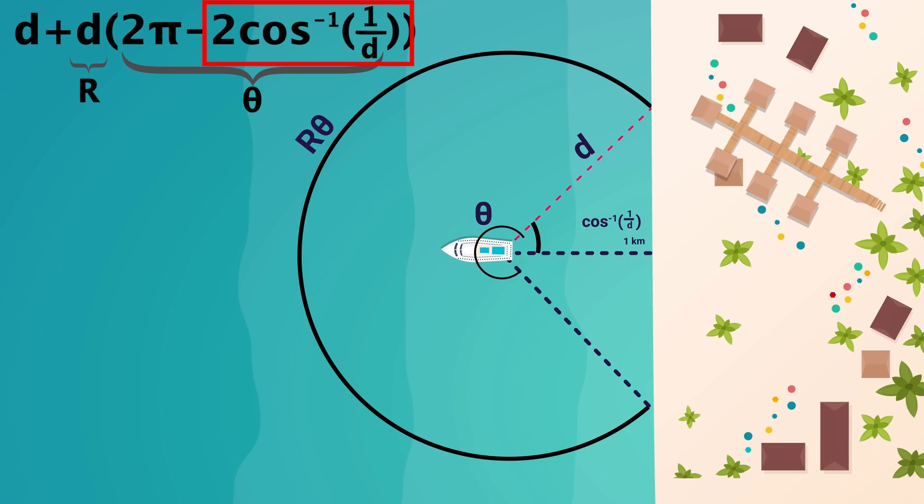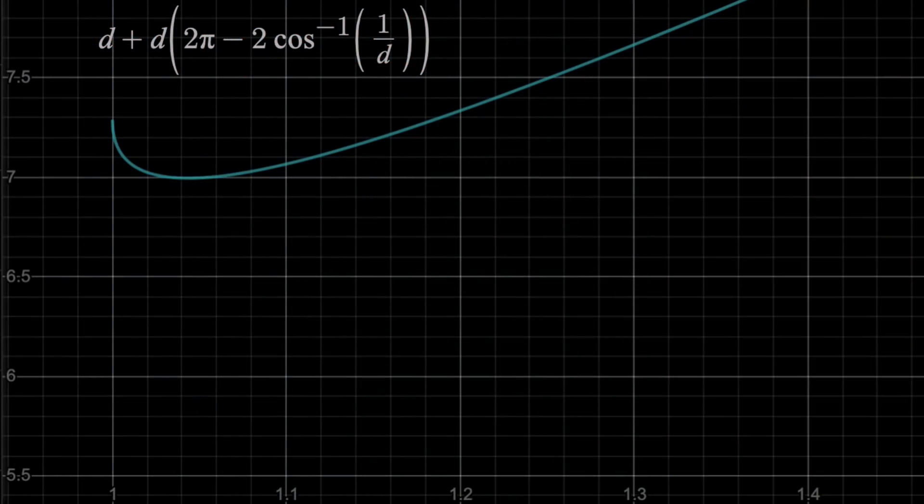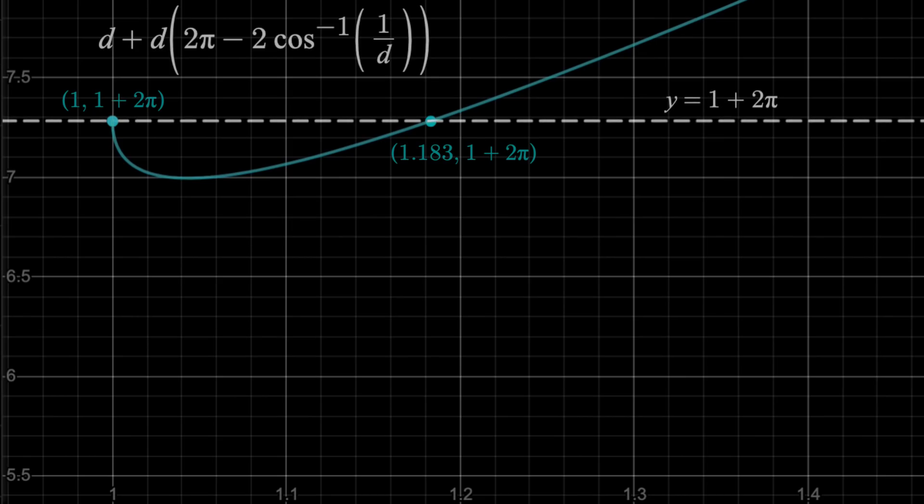Now if we graph this equation, we get this here. Again, the y-axis is the distance for the worst case scenario path, while the x-axis is d, the length of that first straight line drive. You'll see here at d equals 1, or d equals 1.183 kilometers, the worst case path is 1 plus 2 pi. But anything in between is shorter. And the absolute minimum lies here, at 1.04, 6.995.